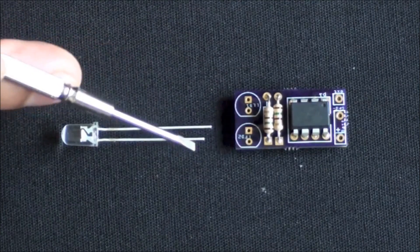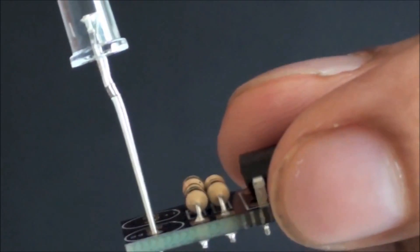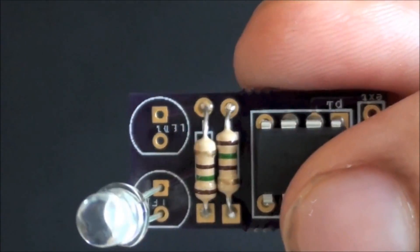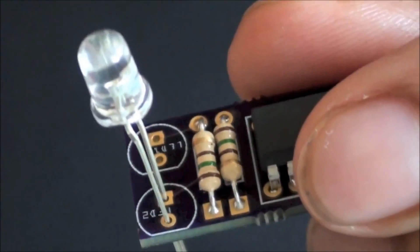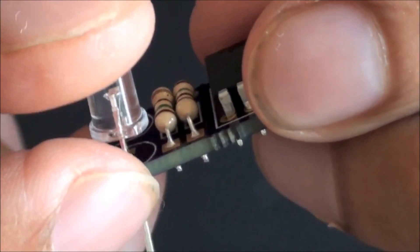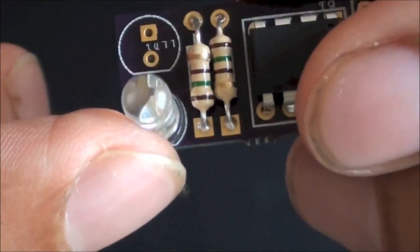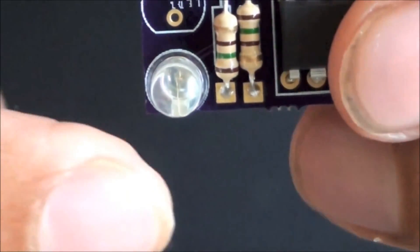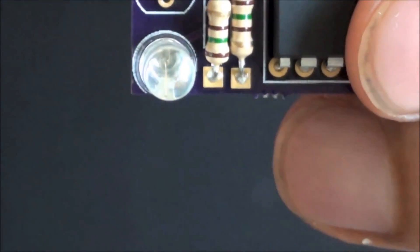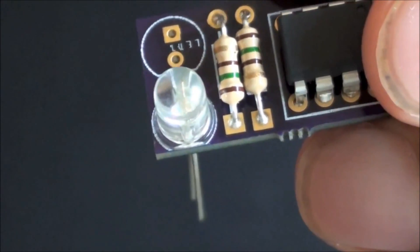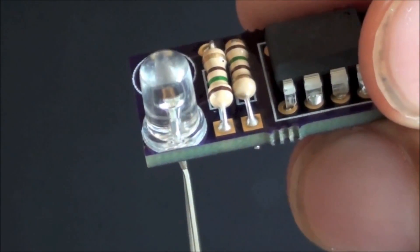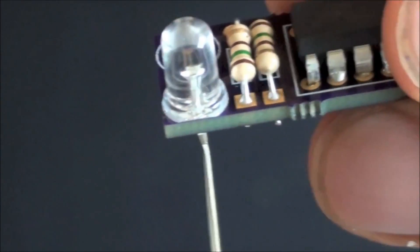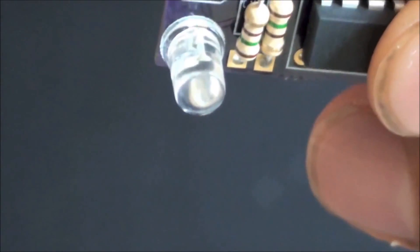You can also see that the PCB board has a circle and a square around the pinhole where the LED is to be placed. The square will be used for the long leg, which is positive, and the circle will be used for the short leg, which is negative. You will also notice that the PCB has a drawing of the LED's outline around the pinholes. Notice that there is a rounded side and a flat side on the LED bottom. This should also match the drawing around the LED pinholes.